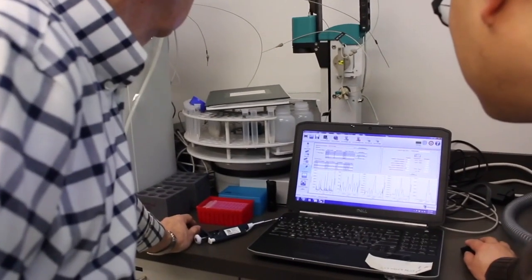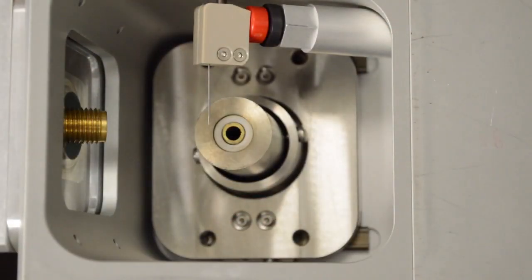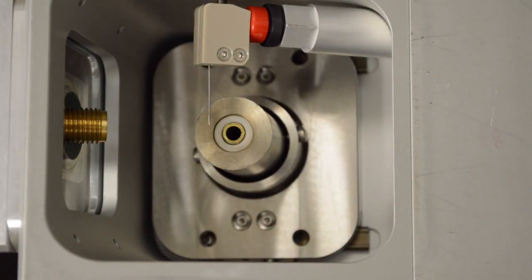Heated nitrogen in the ASAP-enabled APCI ion source will vaporize your sample, or the corona discharge needle will ionize it.